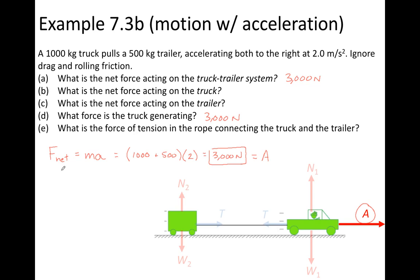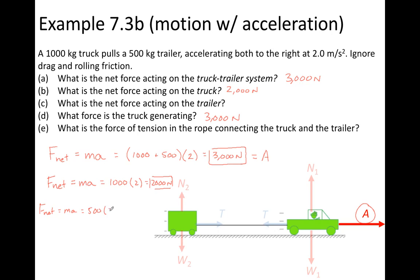The net force on the truck I can calculate using Newton's second law — mass times acceleration. Focusing only on the truck, I use the mass of the truck only, giving us 2000 newtons. For the net force acting on the trailer, we use Newton's second law again with the mass of the trailer. The trailer has the same 2 meters per second squared acceleration, so the trailer experiences a net force of 1000 newtons. The net force on the truck plus the net force on the trailer equals the net force on the truck and trailer together.